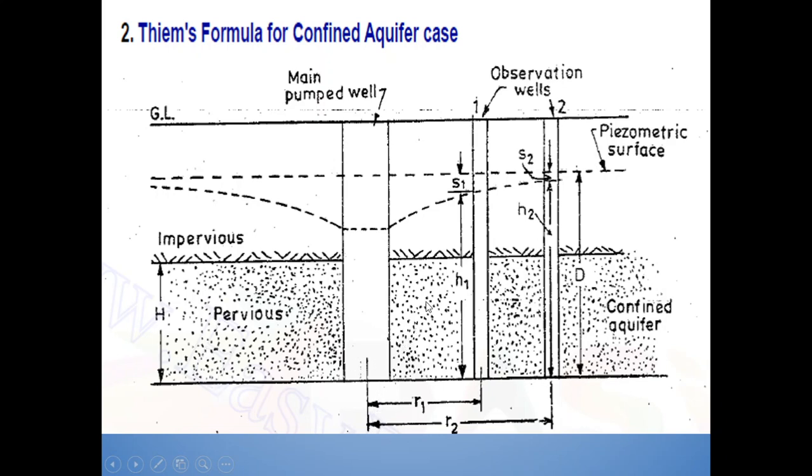This is a pervious strata. Then as earlier, there are two observation wells located, situated apart from the main well at a distance of R1 and R2. Here, instead of drawdown, you can see this is the drawdown itself and this is the piezometric surface.